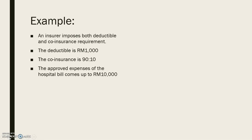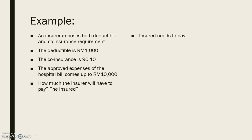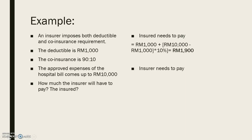For example, an insurer imposes both deductibles and co-insurance requirements. The deductible is 1,000 and the co-insurance is 10%. The approved expense of a hospital bill came up to 10,000. The insured needs to pay 1,000 (the deductible) plus 10% of the remaining balance (10,000 minus 1,000), which equals 900. So the total amount the insured pays is 1,900, and the insurer pays 8,100.